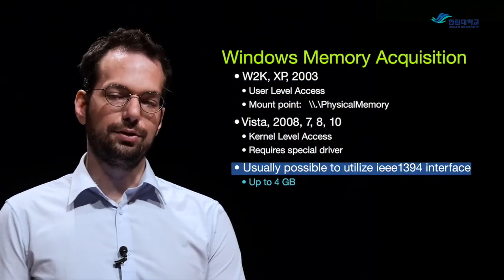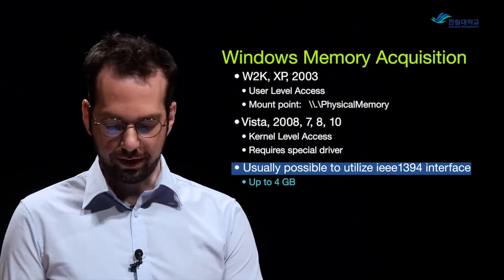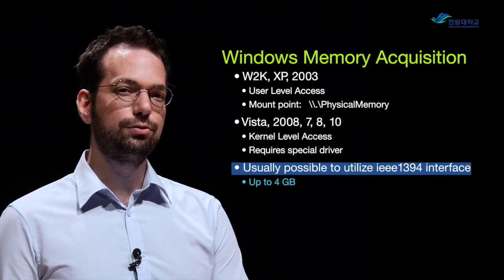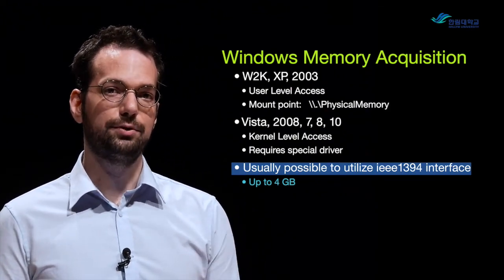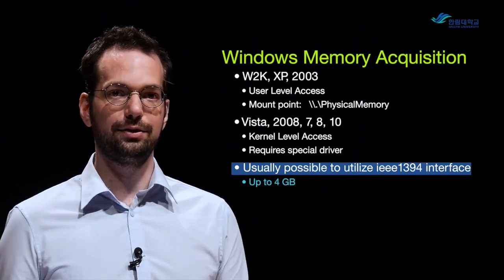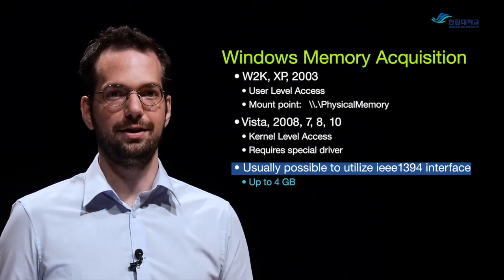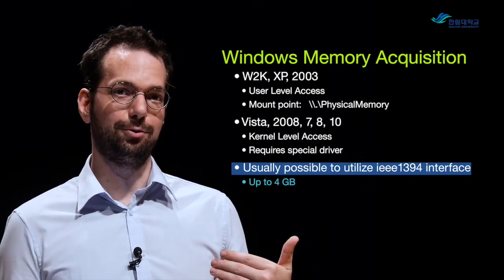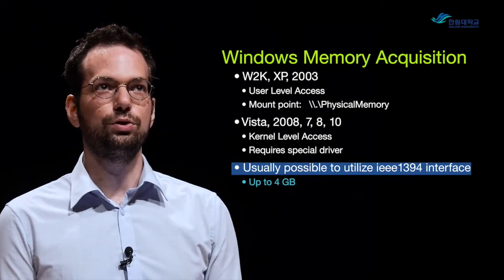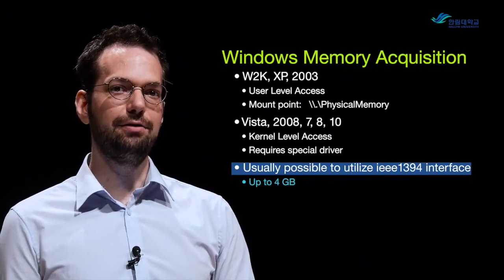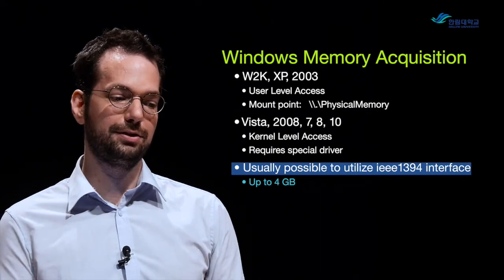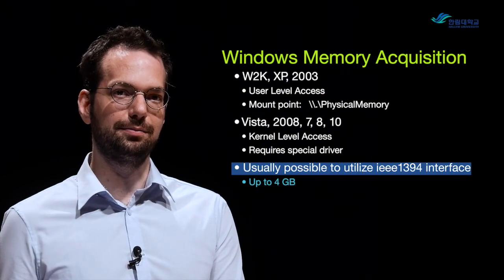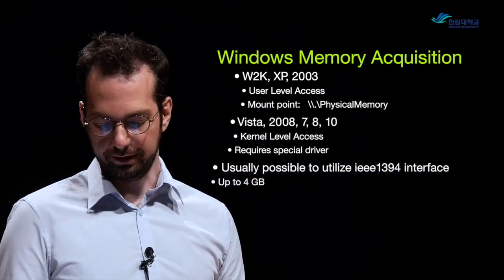It's also usually possible to utilize what's called FireWire or IEEE 1394 interfaces to access up to four gigabytes of RAM directly outside of the system. So if I have a computer with a FireWire interface, I can connect it to another computer and get access to and copy that four gigabytes. Usually, if there's a password available in RAM, it's going to be in the first four gigs. We've had a lot of success getting into systems once we collect memory over FireWire.